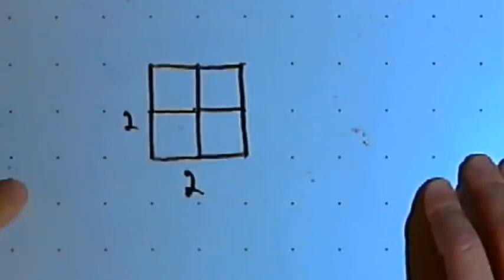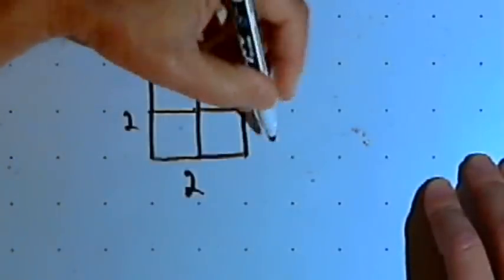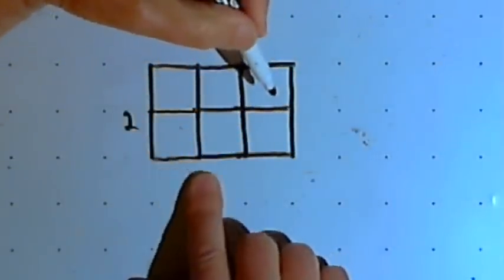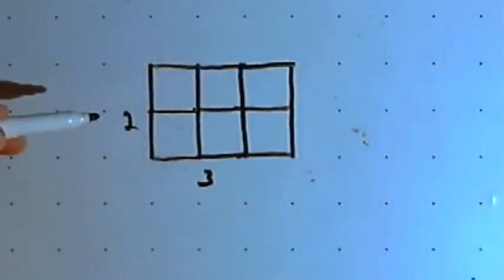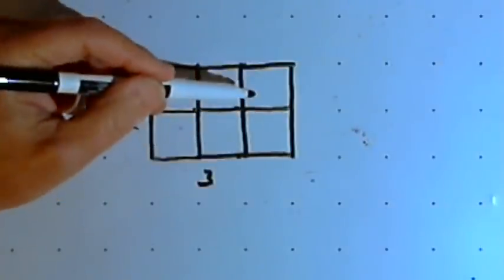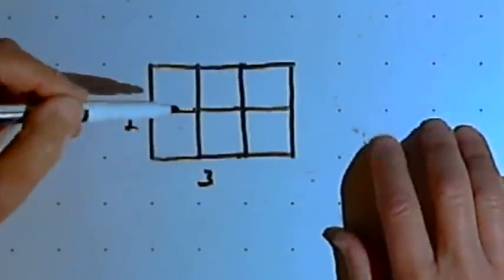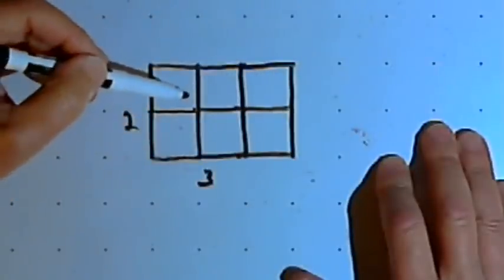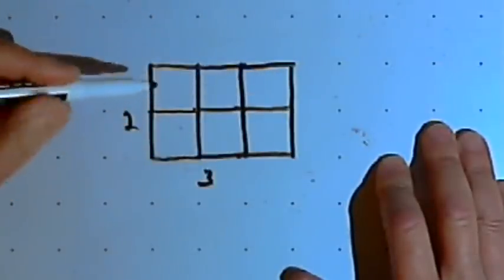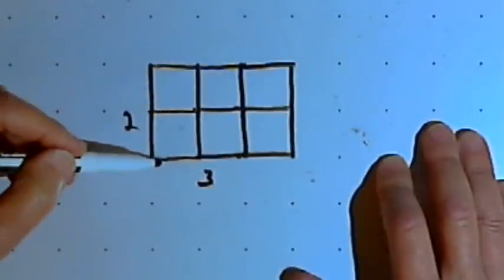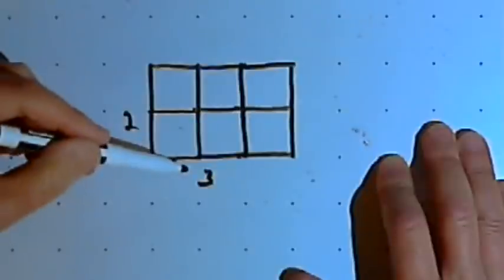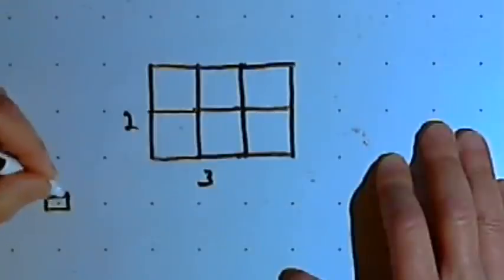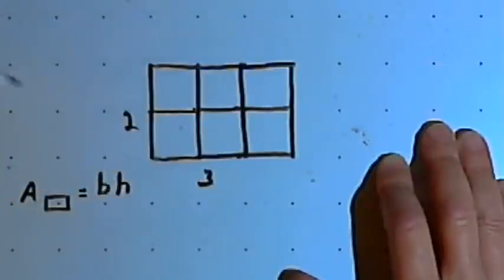Let's go from the square to a rectangle. I'll take the square and extend the base so it's now three inches long. It's going to contain six one-inch squares, so the area of that two-by-three rectangle is six square inches. I could get that area by multiplying the base of the rectangle, three, by its height, two. Two times three is six. So the area of a rectangle is just the base times the height.